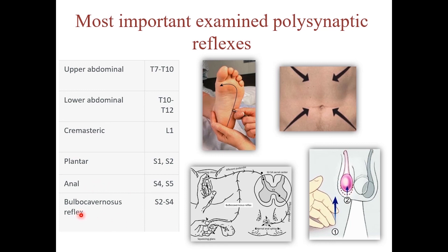Also one of the most important reflexes is the bulbocavernosus reflex, which is important in the diagnosis of spinal shock. It can be tested by compressing the glans penis in males or applying pressure on the clitoris in females, and observing contraction of the anal sphincter. It is also the first reflex that returns after the end of spinal shock.